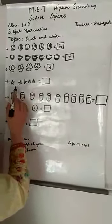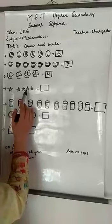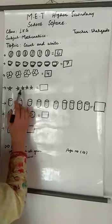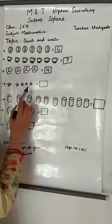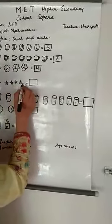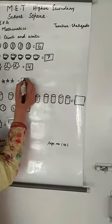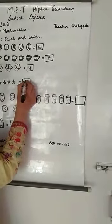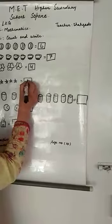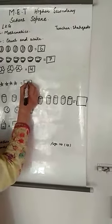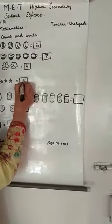यहाँ stars हैं: one, two, three, four, five. यह हैं five stars। इसको count करना है, box में लिखना है — five.